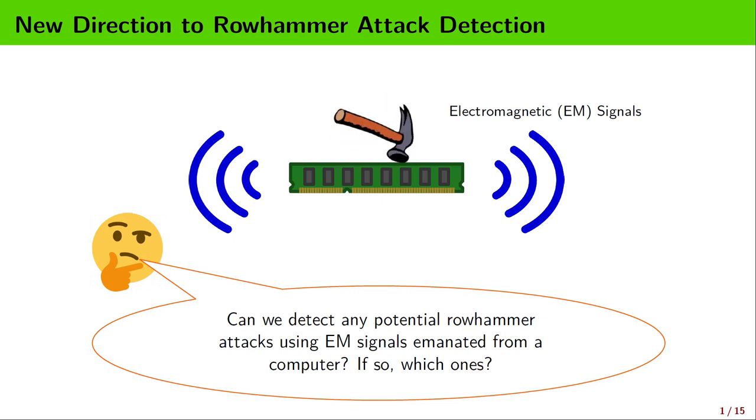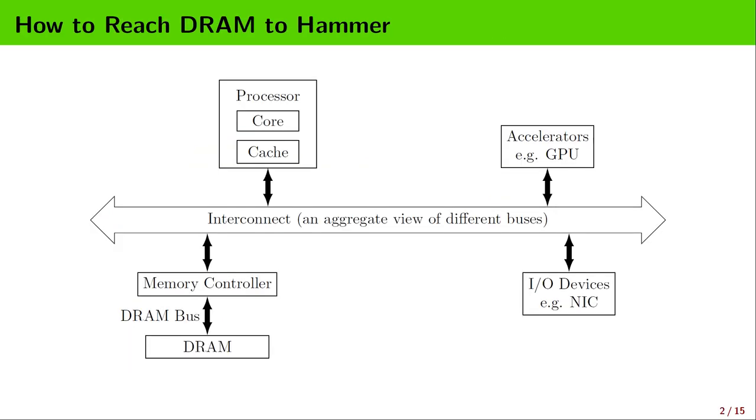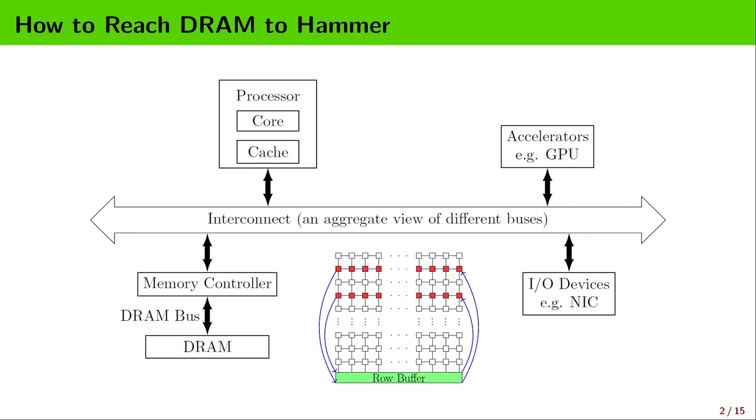To answer this question, we need to think of whose EM signals we should investigate. For this, we first take a look at what components are always involved in a Rowhammer attack. As we know, hammering the DRAM to trigger the Rowhammer bug is the prerequisite for any Rowhammer attack. Hammering the DRAM is to repeatedly and rapidly access the same rows in a DRAM bank.